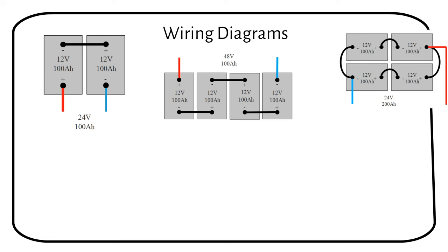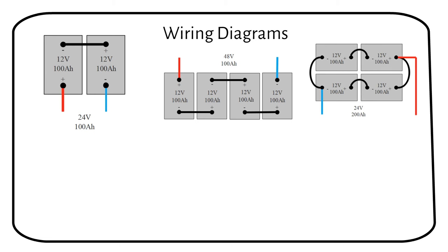We can also use a hybrid connection where we have 2 batteries in series and then in parallel. This is called a 2S2P configuration or series-parallel. We will get a battery of 24 volts at 200 amp hours.